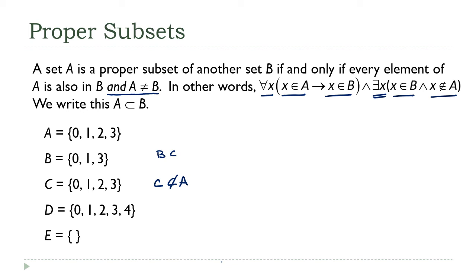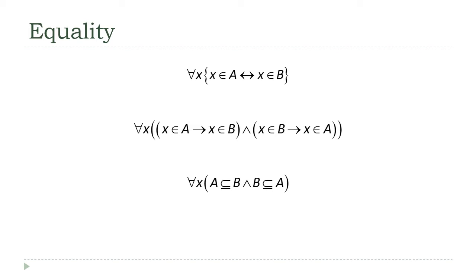B is both a subset and a proper subset. D is still not, if it's not a subset, it's not going to be a proper subset. And E is also still a proper subset, because there are certainly elements of A that are not in E. In fact, all the elements of A are not in E.